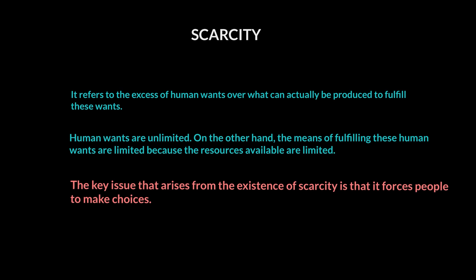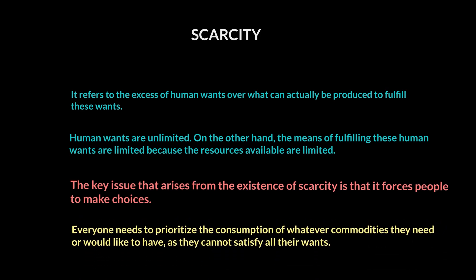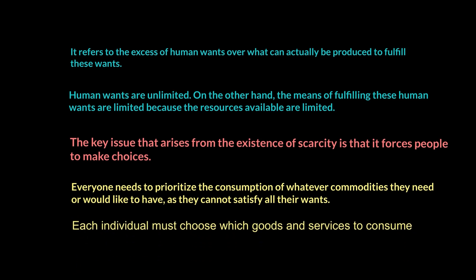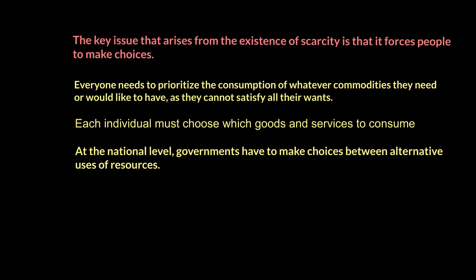Because of their limited resources, people can only fulfill some of their wants, and therefore they need to make choices. The wants they prefer the most will be fulfilled before the others. Everyone needs to prioritize their consumption of whatever commodities they need or would like to have, as they cannot satisfy all their wants. This is not only true for individuals but also at the national level — each individual must choose which goods and services to consume, and governments must also decide which goods to produce and which not to produce.